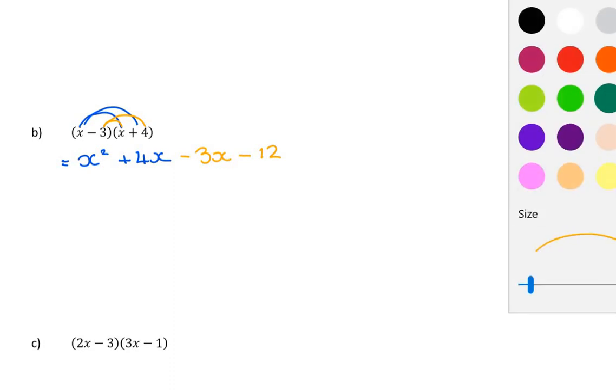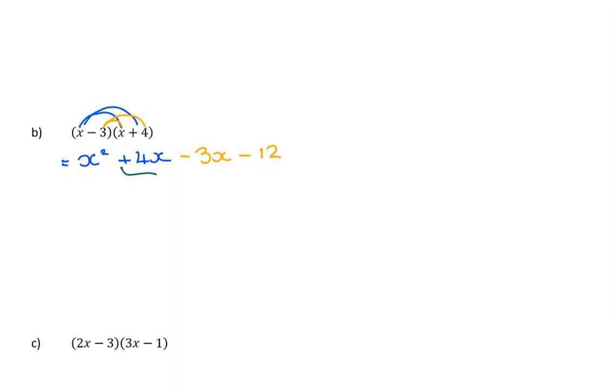So everything is about multiplying. Lastly again I have like terms in the middle which is not always the case but here it is. 4x take away 3x is x and minus 12. And I actually land up with three terms in my answer.